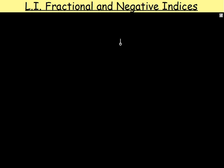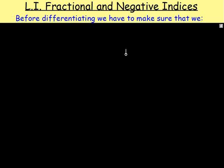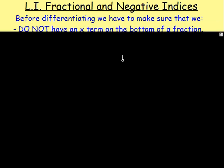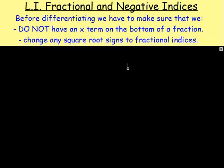So when you differentiate, there are two things that you have to look out for. Before differentiating, we have to make sure that, first of all, we do not have an x term on the bottom of a fraction. If we do, we can use the rules of indices to move it from the bottom to the top. Also, we have to make sure that if we have any square root signs — square roots, cube roots, fourth roots — we change them to fractional indices.